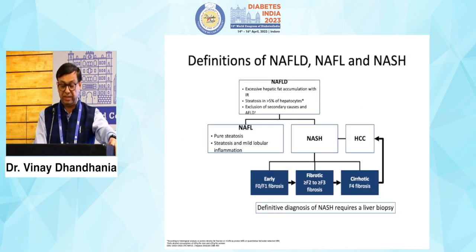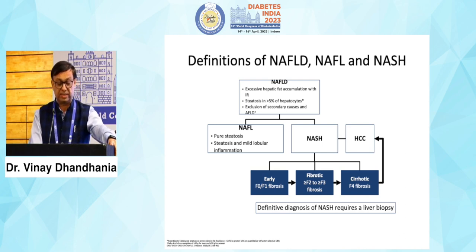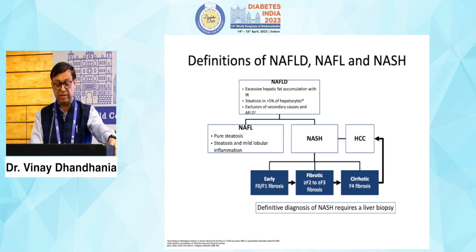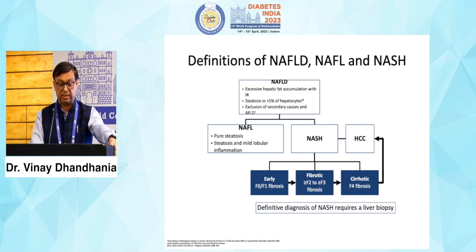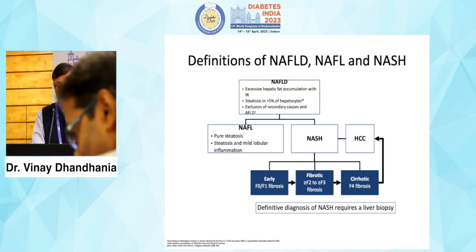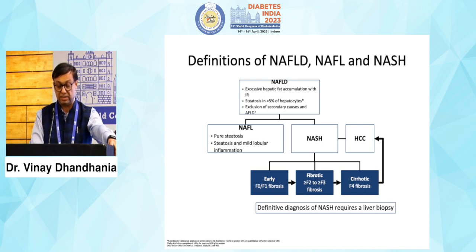The definition of NAFLD is basically excessive hepatic fat accumulation due to insulin resistance — accumulation of triacylglycerol, steatosis in more than 5% of hepatocytes, with exclusion of secondary causes and alcoholic fatty liver disease. NAFLD is pure steatosis or steatosis with mild lobular inflammation. NASH involves inflammation and can be in three stages: early mild fibrosis, fibrotic stage, and cirrhosis of the liver, which can even progress to hepatocellular carcinoma.